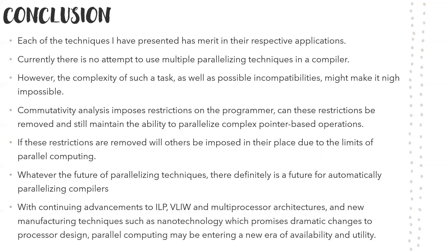In conclusion, we have learned about automatic parallelization — what it means, its history, and how to approach it. Each of these techniques has its own merits and demerits in their specific applications. Currently, there has been no attempt to use multiple parallelizing techniques together in a compiler, as the complexity of such a task makes it highly challenging. However, with commutative analysis, if its restrictions on the programmer are removed, we will be able to build parallelizing compilers soon.